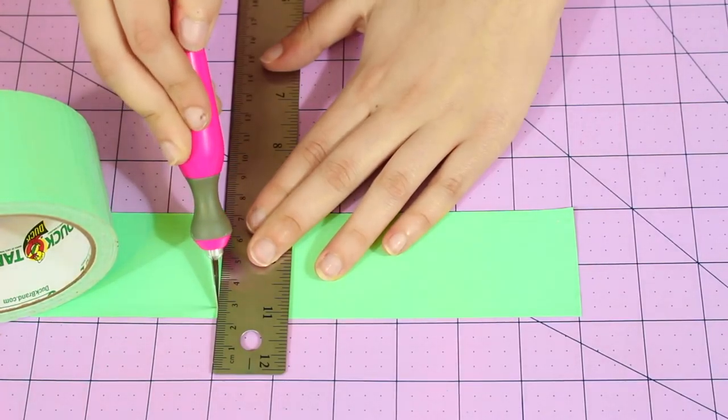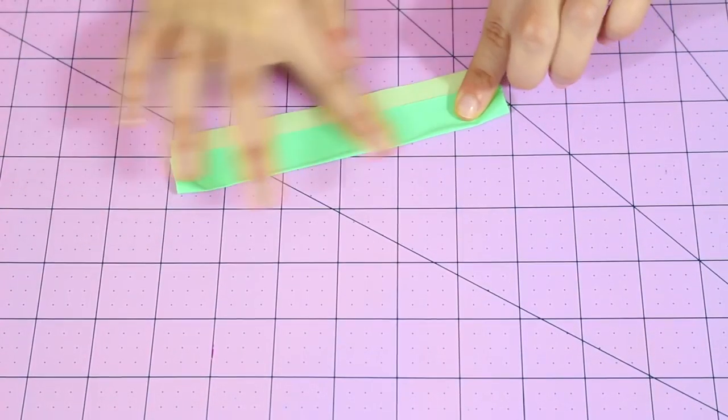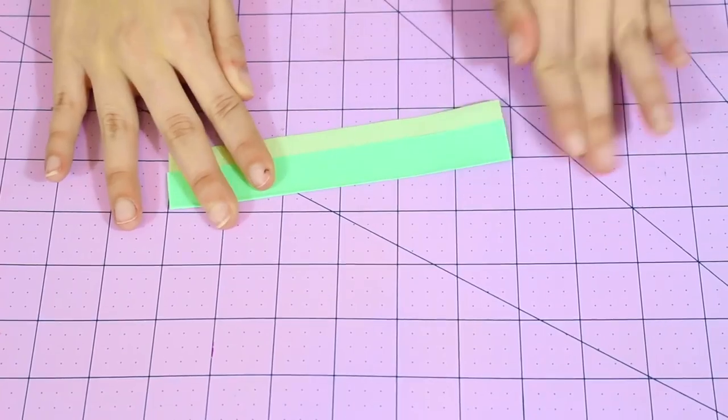And you're going to need eight of these. Now I'm taking my pastel-colored duct tape and I'm cutting a strip that is 6 inches long. And then I'm just repeating the same process.